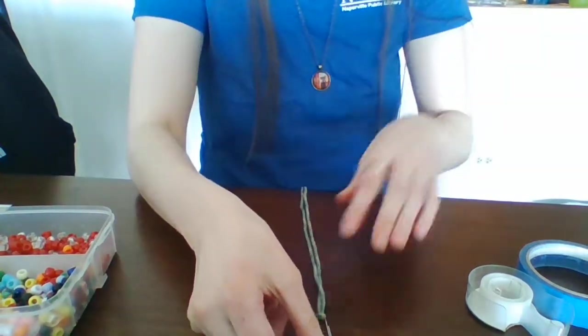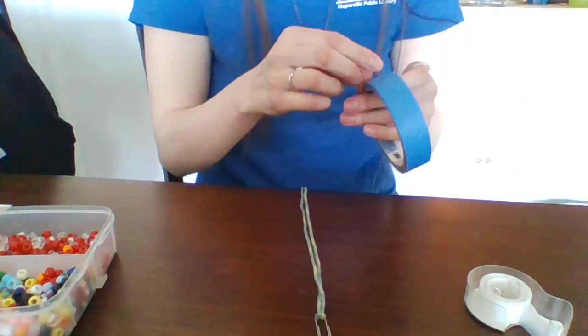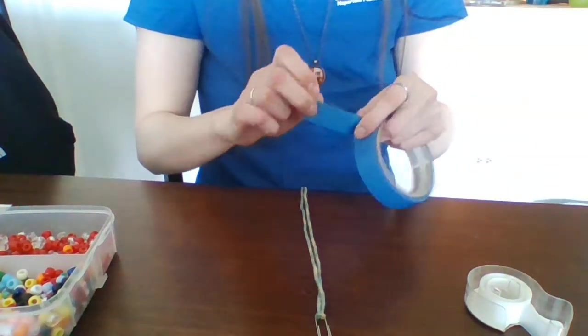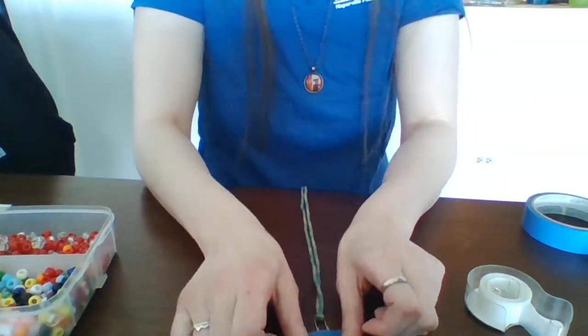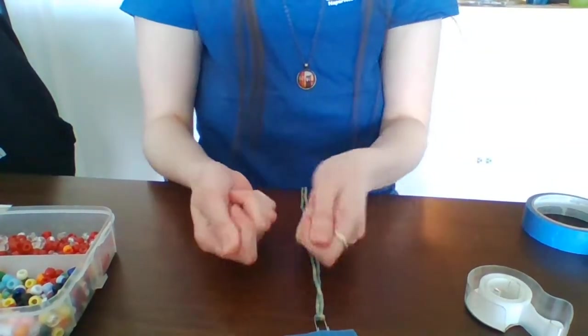Next you're going to tape your paperclip to your surface. This is really helpful for when you start threading the beads onto the ring so you don't worry about the paperclip shifting.